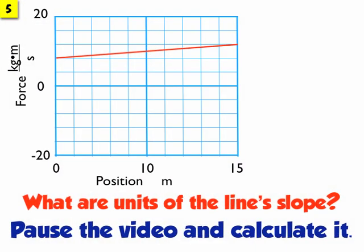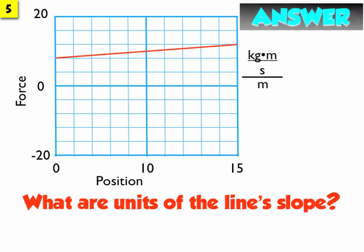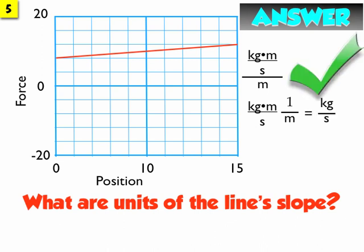Next example. What are the units of the line's slope? Pause the video and calculate it. Let's take a look at it — fraction on top, non-fraction on the bottom. So kilogram meter over seconds over meters. The numerator is a fraction, the denominator is not. Dividing by numbers is the same as multiplying by the inverse. So kilogram meter over seconds times 1 over meters. The meters actually divide out, because there are meters in the numerator and meters in the denominator. Which means this becomes kilogram over second. So the units of the slope of this line are kilogram over second.